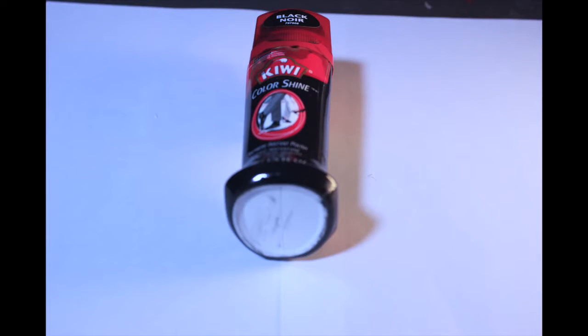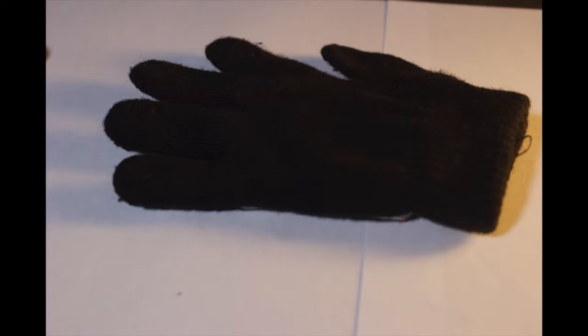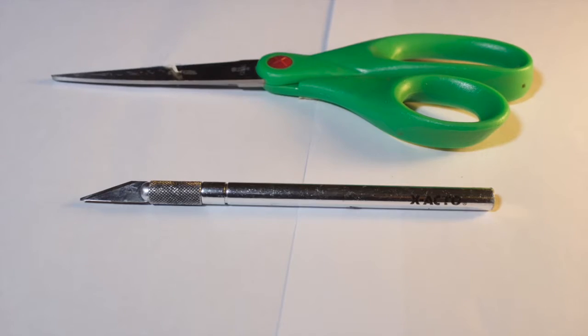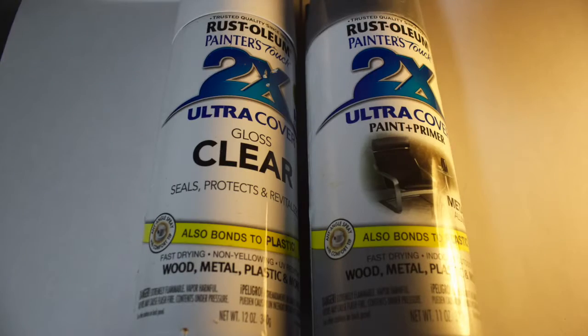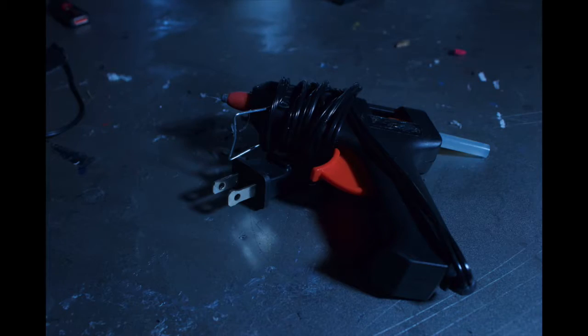What you will need is some Kiwi shoe polish, cardboard, EVA craft foam, a black glove, the template that will be in the link below, an X-Acto knife, aluminum, and clear spray paint. You will need a hot glue gun and hot glue sticks.